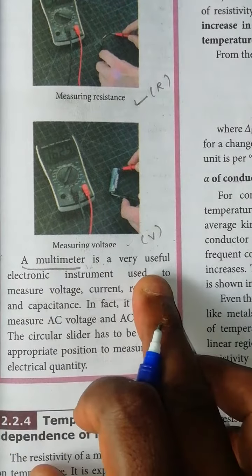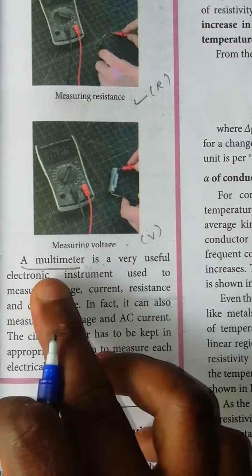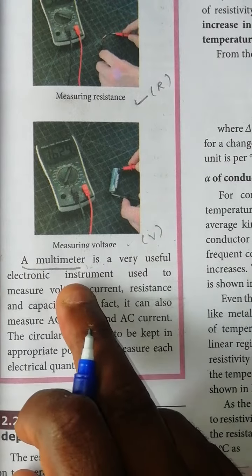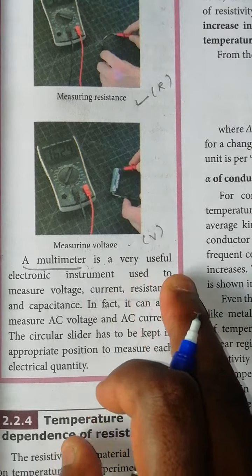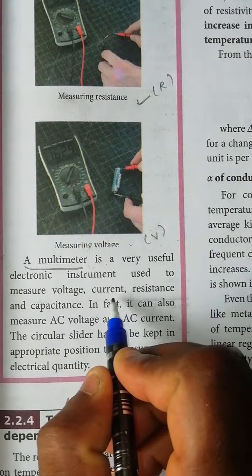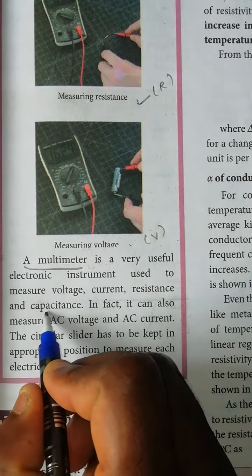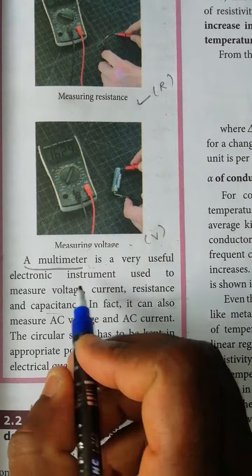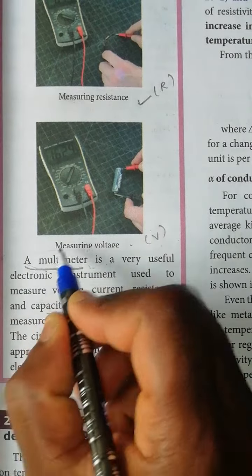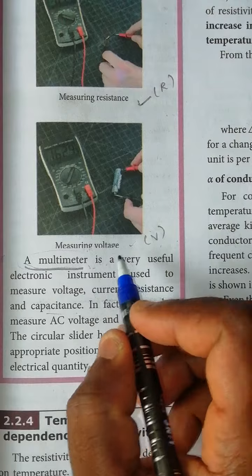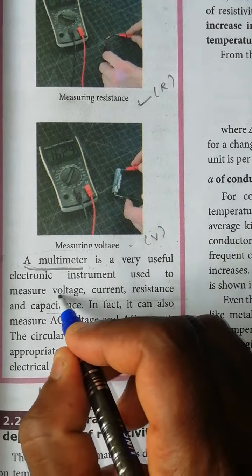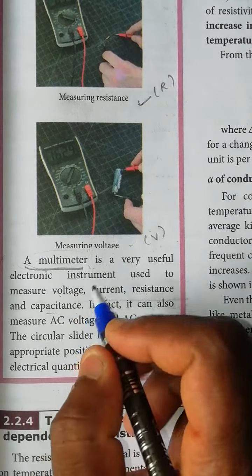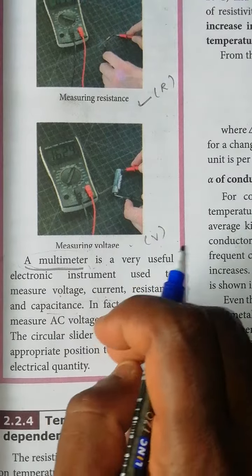A multimeter is a very useful electronic instrument used to measure voltage, current, and resistance. It can also measure capacitance. Using the multimeter, you can measure voltage, current, resistance, and capacitance.